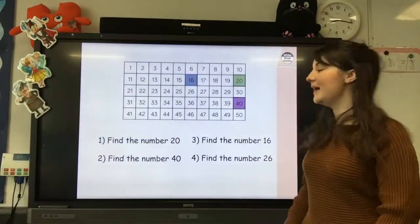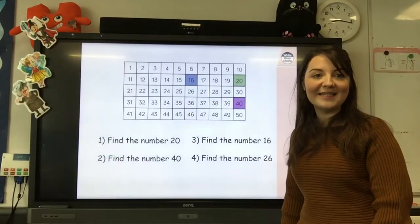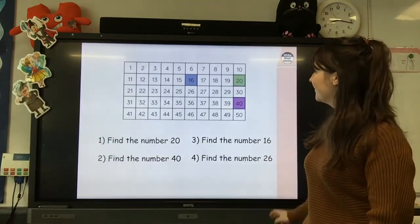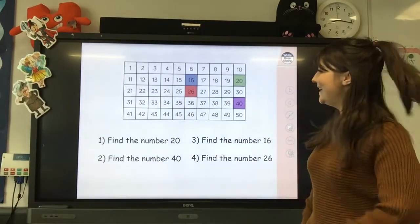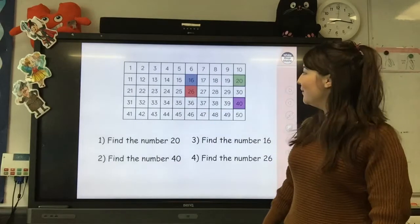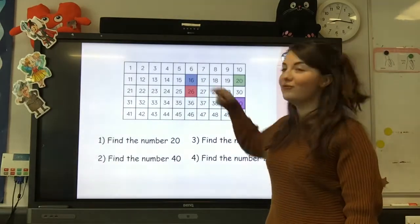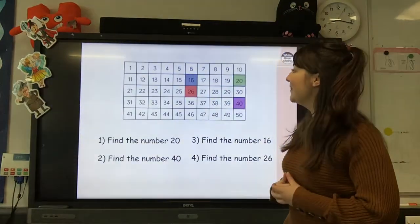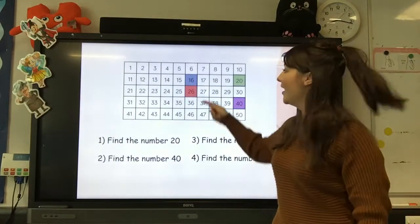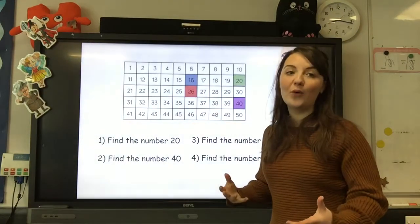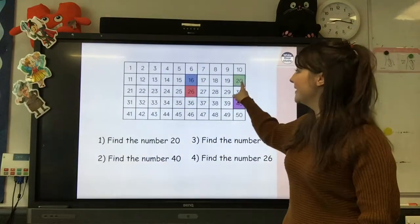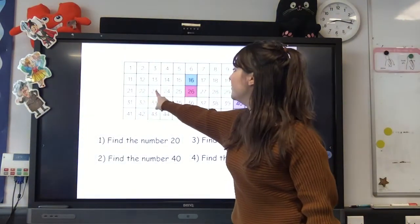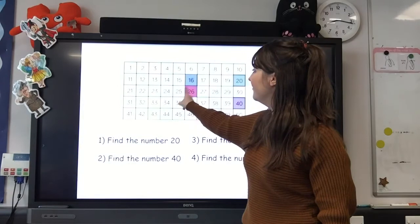Last number is 26. There's 26. Okay, so you will notice that 26 is right below 16, and that's because we had to add on another 10. Or you might have gone to 21 and counted on to 26: 21, 22, 23, 24, 25, 26.